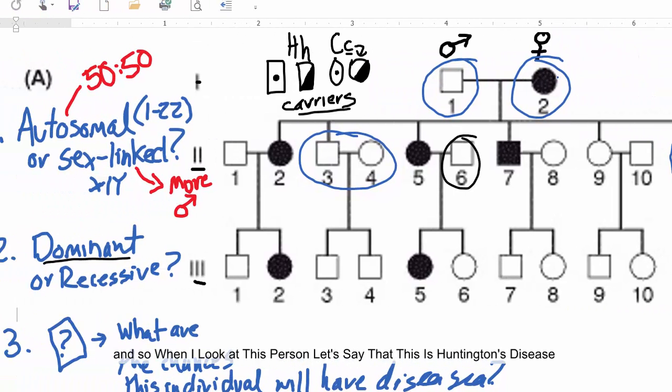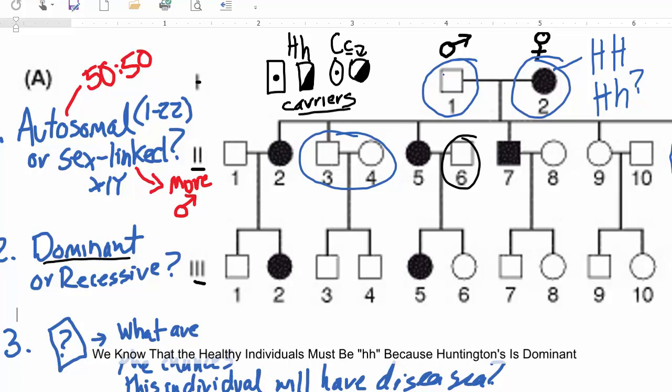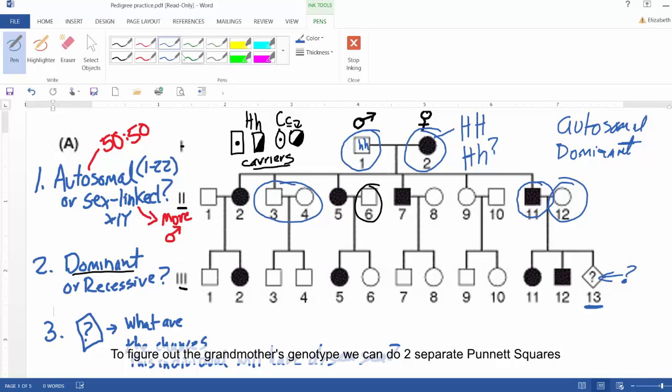And so when I look at this person, let's say that this is Huntington's disease. This person could have HH or they could have big H, little h, and we're not sure. We know that the healthy individuals must be little h, little h because Huntington's is dominant. So if you have one bad copy, then you will get the disease.